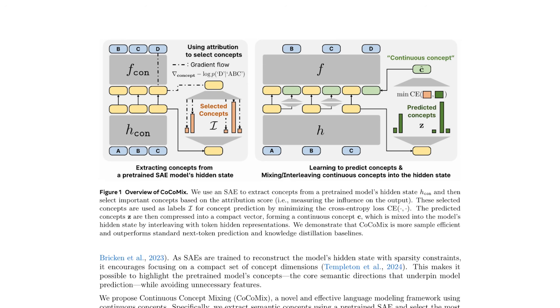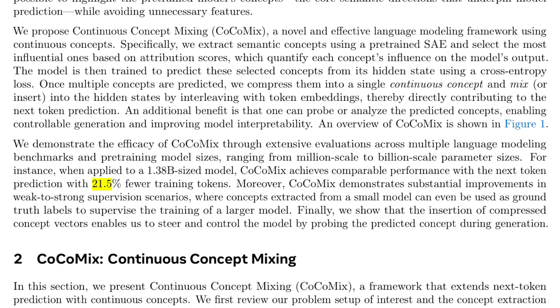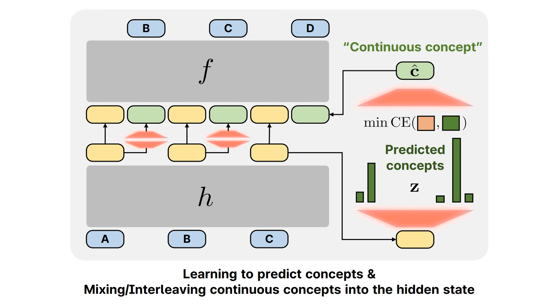So with this setup, it can easily save up to 21.5% of the training tokens to get similar performance compared to the traditional approach, even though you might need more compute for the SAE process.